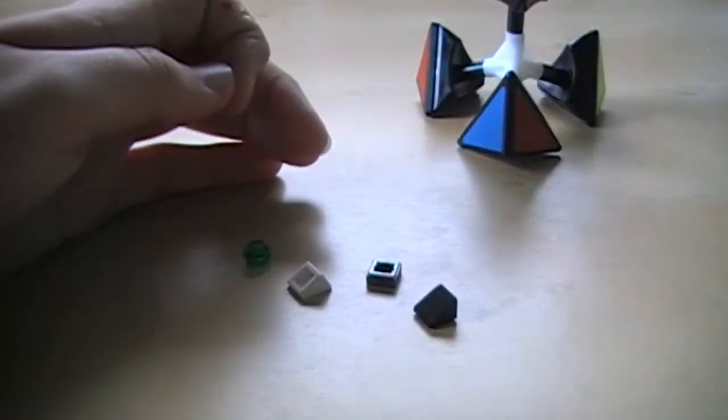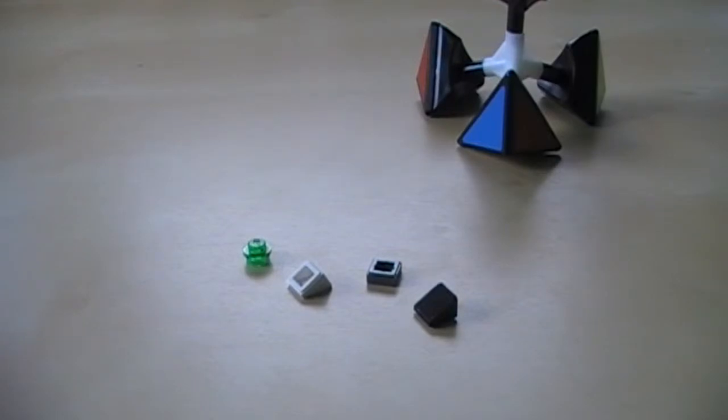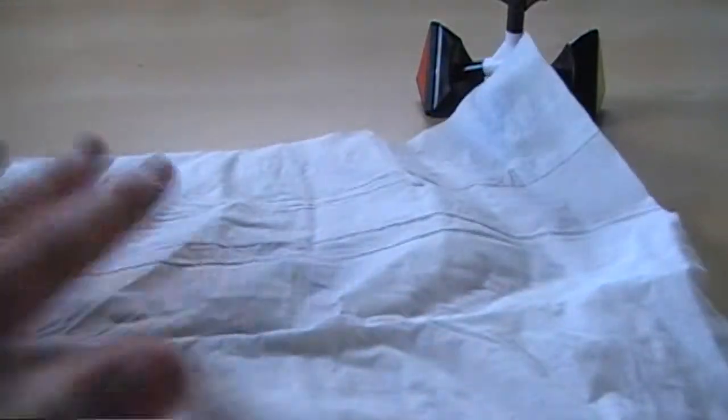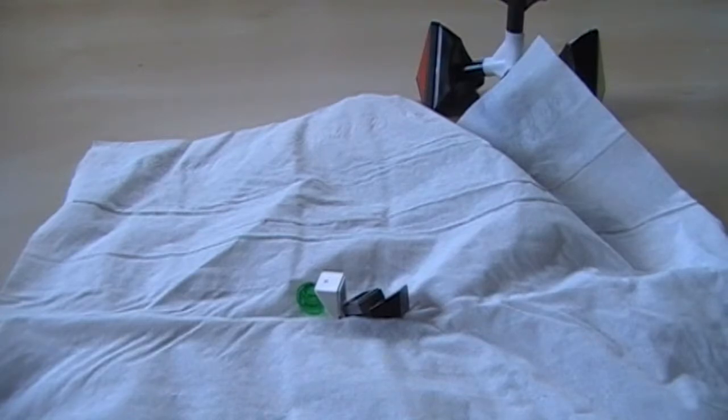So the first thing you're going to do, since you're going to be using super glue, is you're going to set down something like a paper towel or a piece of paper, or just a Kleenex or something to make it so that the super glue doesn't get on your table. Okay, I'm just going to be using this Kleenex just to make it easy.